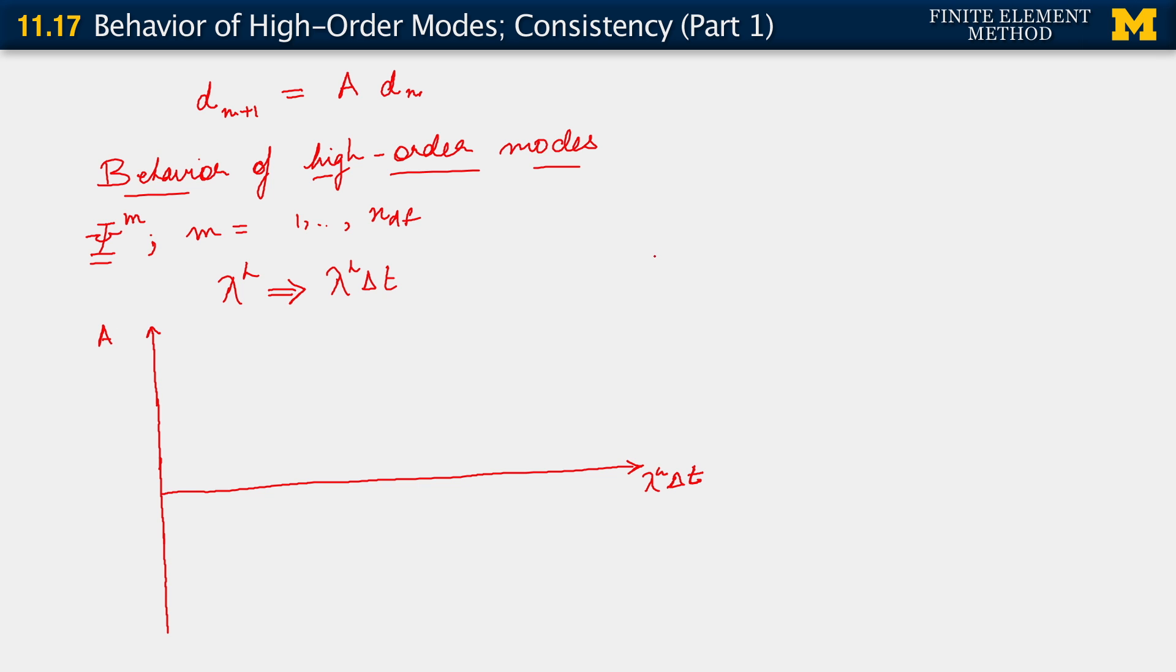It's useful, by the way, also to look at what the amplification factor is for our exact equation. And I'm going to write that up here. For the exact equation, for the time exact single degree of freedom modal equation, we know that d of t equals d at 0 exponent of minus lambda h t. So effectively, we have here a sort of time continuous amplification factor.